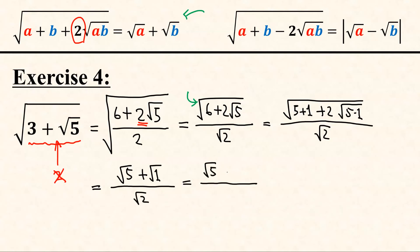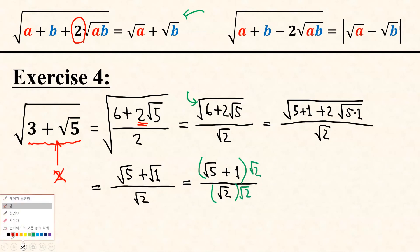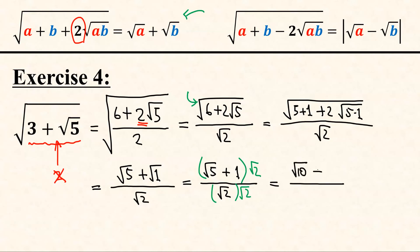So the numerator becomes square root of 5 plus square root of 1, giving us (square root of 5 plus 1) over square root of 2. Rationalizing the denominator by multiplying by square root of 2 at both numerator and denominator, we get (square root of 10 plus square root of 2) over 2. And this is our answer.